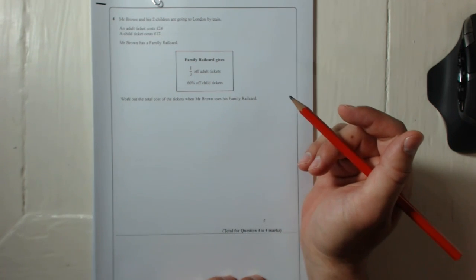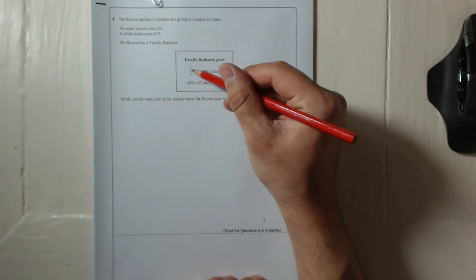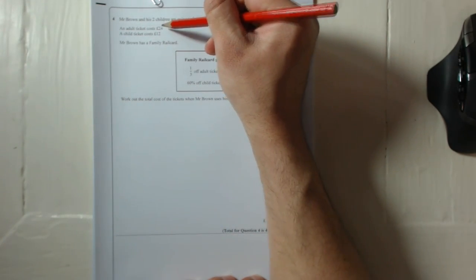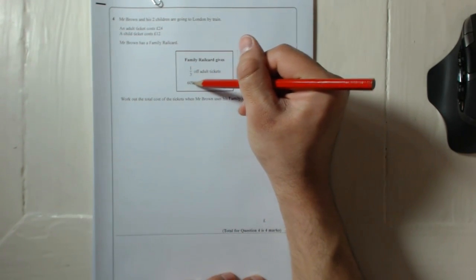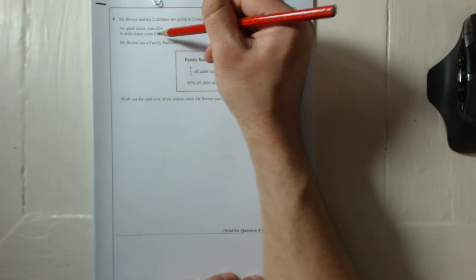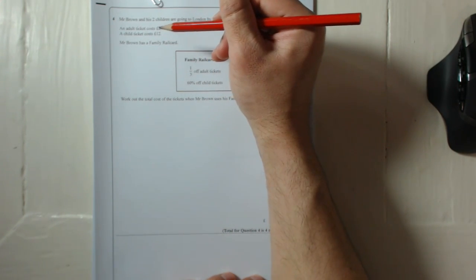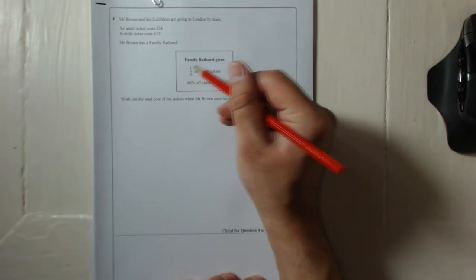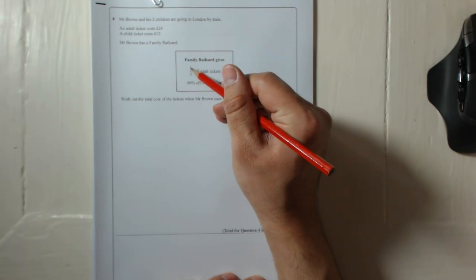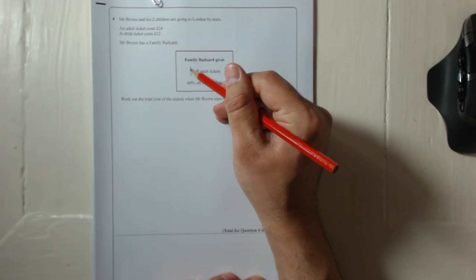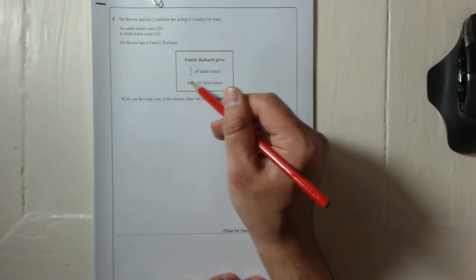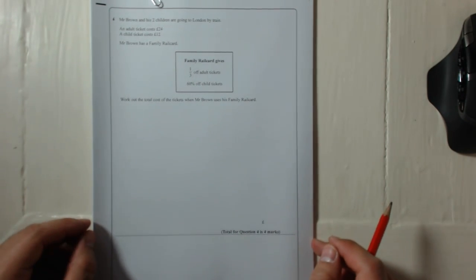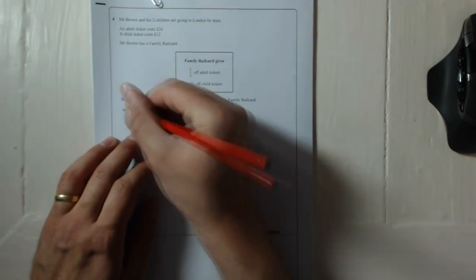You can either find a third of £24 and then take it off, or you can find 60% of £12 and take that off. But it might be easier to find two thirds of the price of the adult ticket since he's got a third off, and then 40% of the child ticket. But it doesn't really matter. So we'll start with the adult ticket.